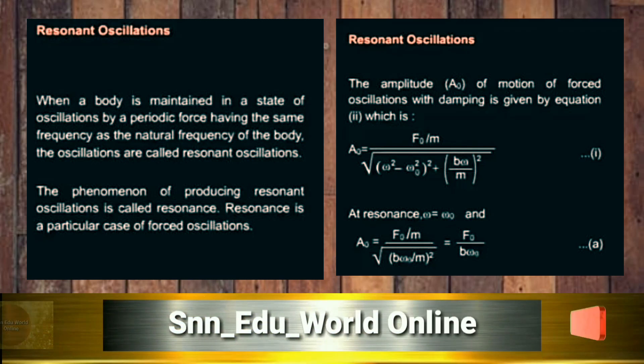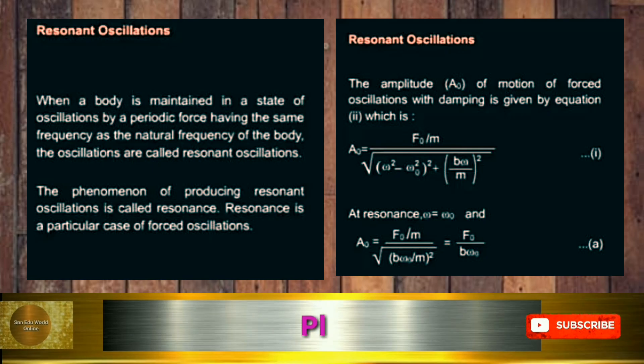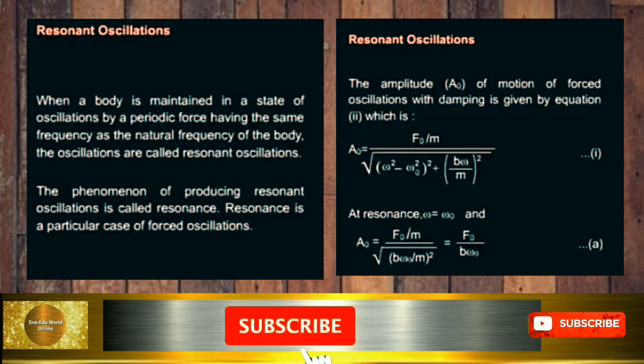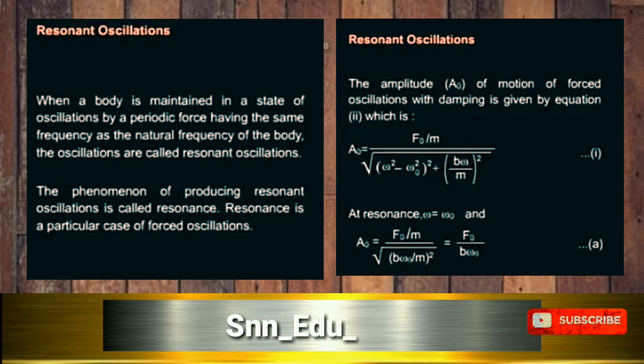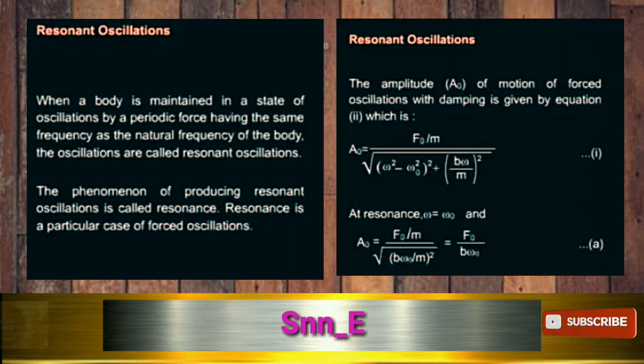At resonance, ω = ω₀, and we get A₀ = (F₀/m) / √[(bω₀/m)²]. When solving, we get amplitude = F₀/(bω₀).